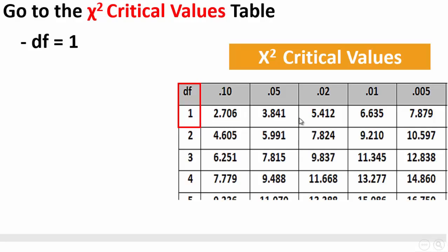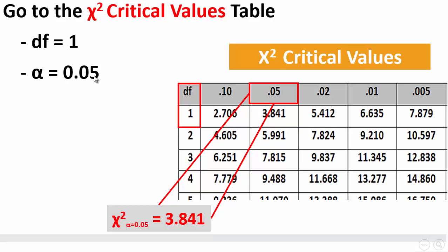Alpha is equal to 0.05. We will go to the column which starts by 0.05. This is the column of 0.05.